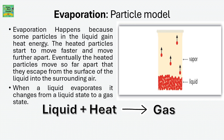The particle model of evaporation: evaporation happens when some particles in the liquid gain heat energy. The heated particles start to move faster and move further apart. Eventually the heated particles move so far apart that they escape from the surface of the liquid into the surrounding air. When a liquid evaporates, it changes from a liquid state to a gas state.